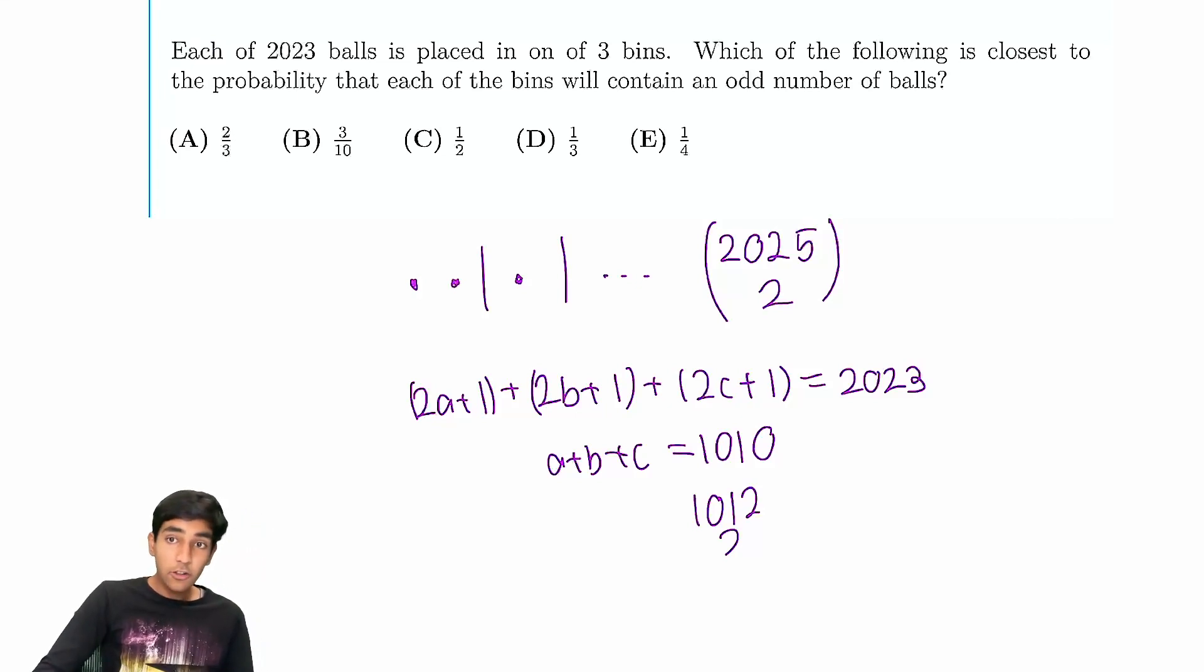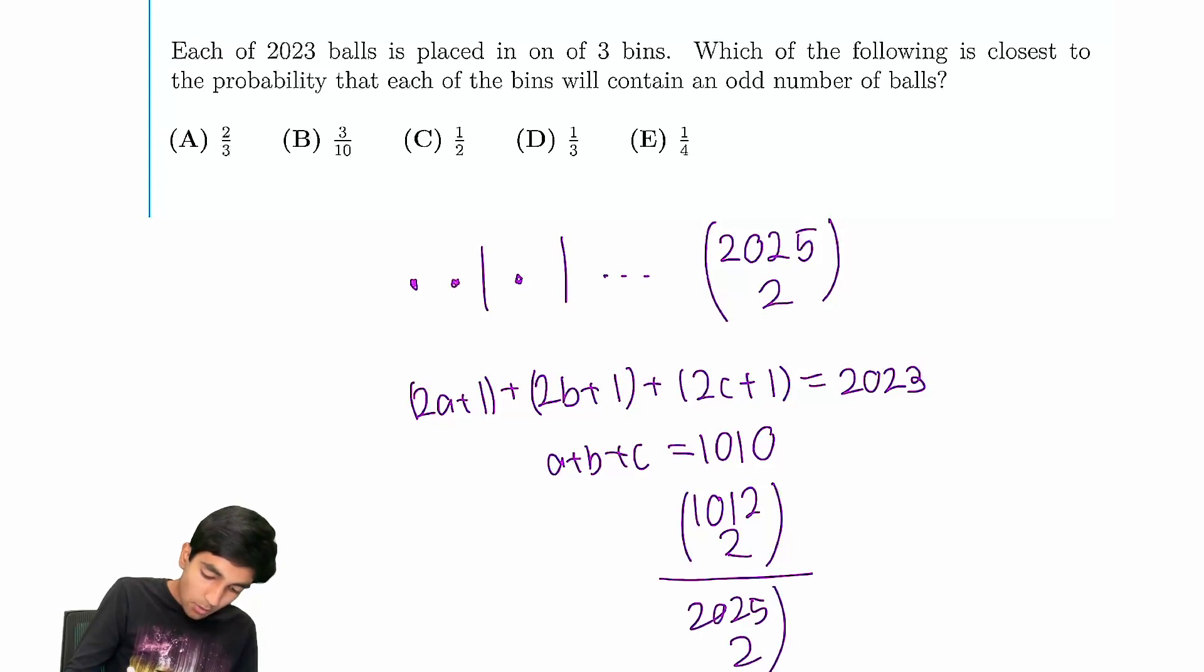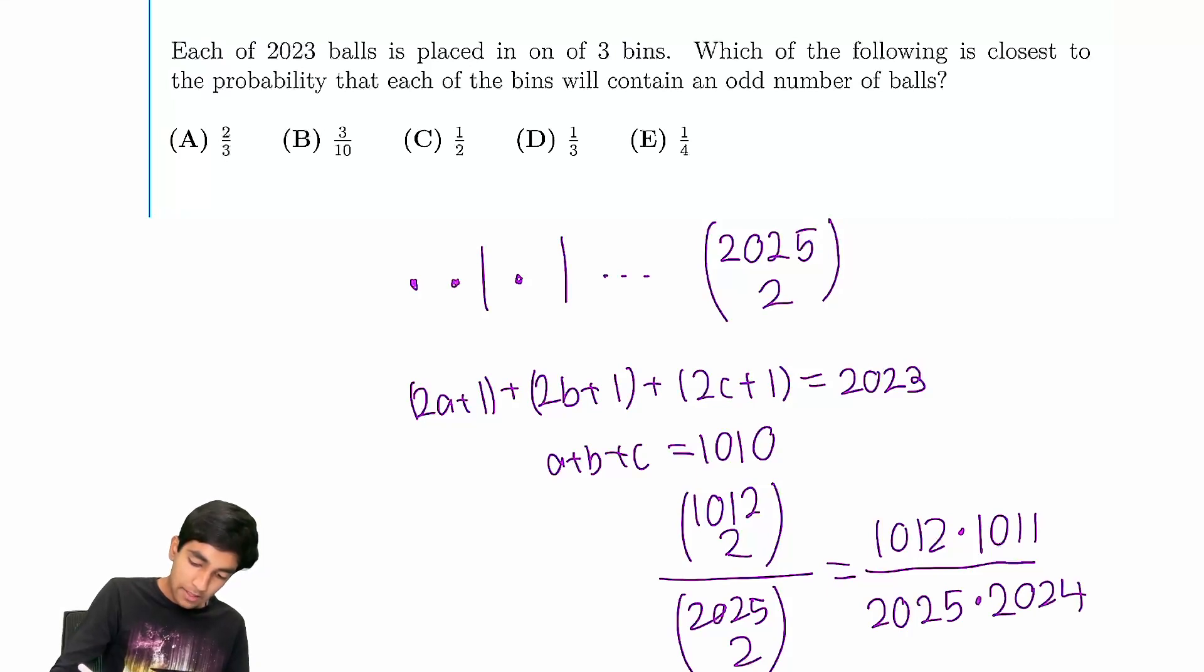So now our answer is just going to be 1012 choose 2 divided by 2025 choose 2. And we can just write out the terms: 1012 times 1011 divided by 2 factorial, which is just going to cancel out. And the key thing here is that this is approximately 2, and this is also approximately 2. So 1/4 is the closest option.